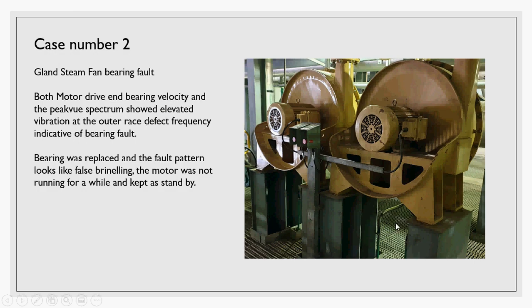Both the motor drive end bearing velocity and big view spectrum showed elevated vibration at the outer race bearing defect frequency, which was indicative of a bearing fault. The bearing was replaced and the fault pattern looks like false brinelling. It's very important when you find inner race, outer race, cage, or rolling element bearing fault in your spectrum and take the decision to replace the bearing — please keep the bearing, don't throw it away.